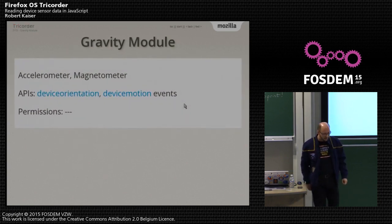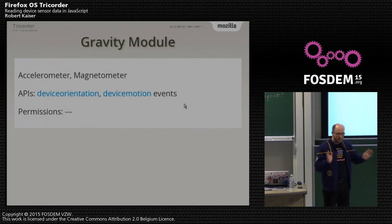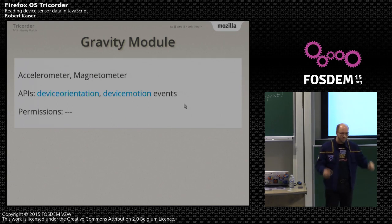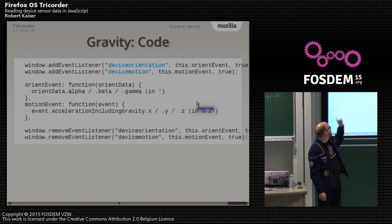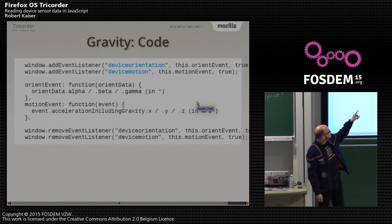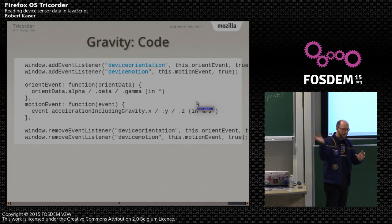The second thing I did I called the gravity module because it actually measures Earth's gravity as a side function. It accesses the accelerometer and the magnetometer — a magnetic compass in 3D. The APIs for that are actually events: the device orientation and device motion events. Those don't need any permission at all — you can even use that in websites without any prompt. The code uses addEventListener on the window. I have 'this dot' on all those things because the module is a JavaScript object, so I set everything on the module's JavaScript object to avoid polluting the namespace.